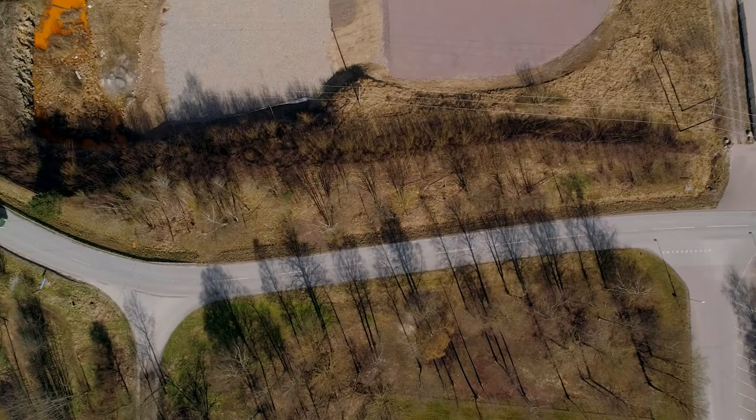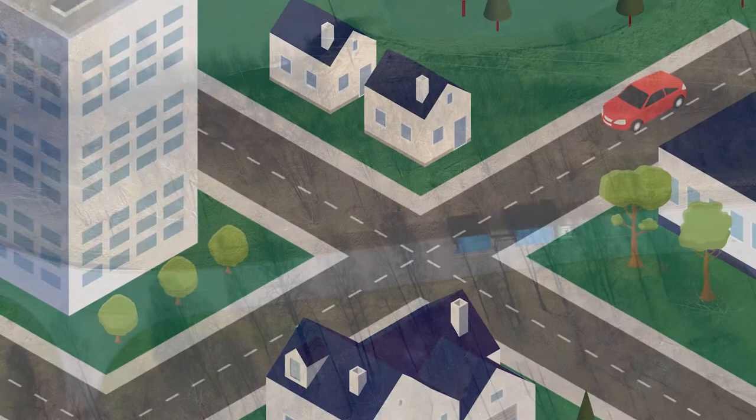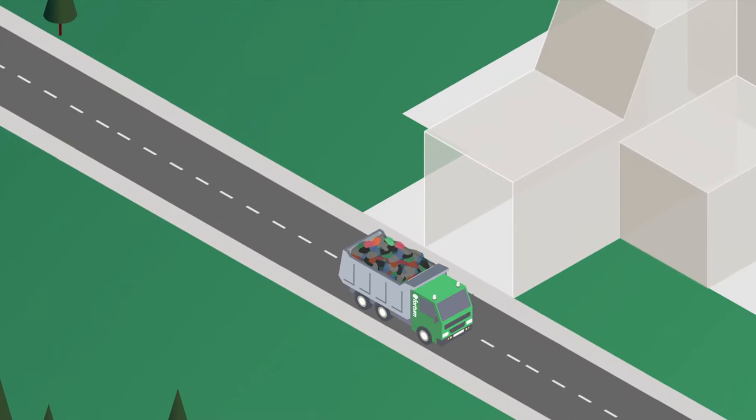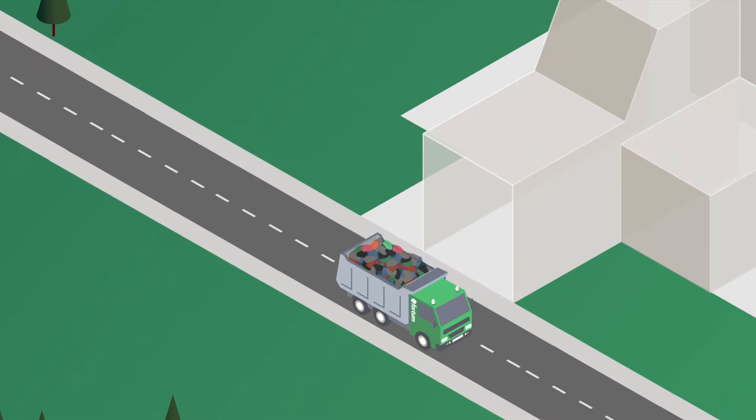Fortum Recycling Waste har två anläggningar för förbränning: en roterugn och en rosterpanna. Det farligaste avfallet tas om hand i vår roterugn vid vår anläggning i Kumla. Här finns kapacitet att förbränna 50,000 ton farligt avfall per år.